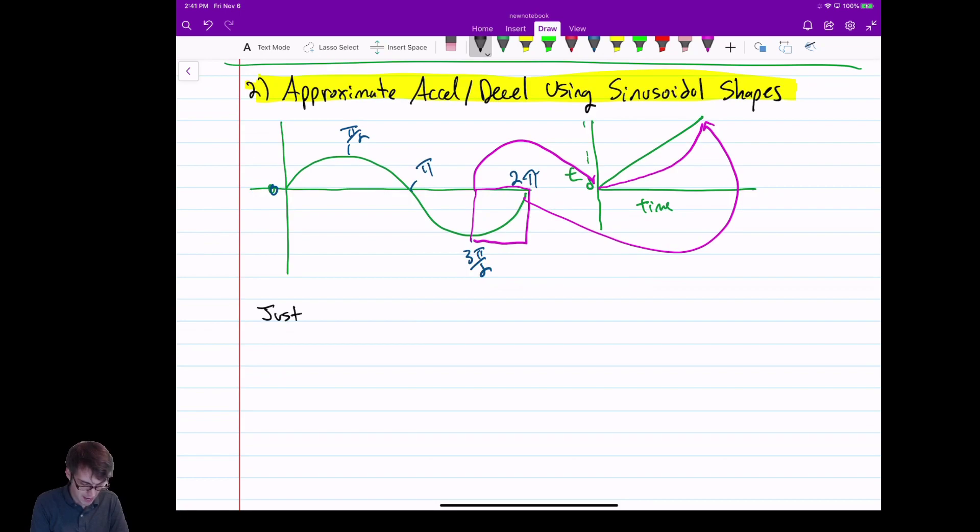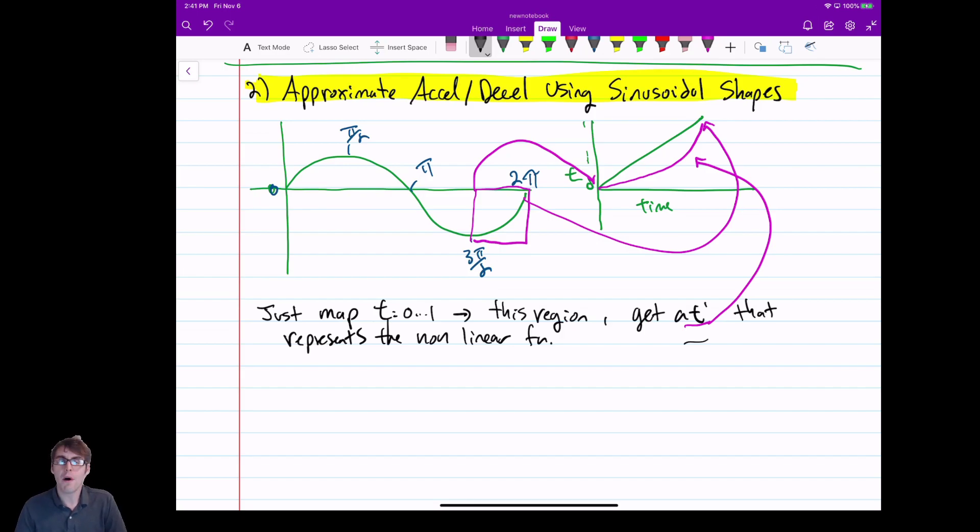So what we want to do is just do that mapping. So we map t of zero to one to this region. And then if we do that, we come up with like a t prime. A t prime that represents the pink line, that represents the nonlinear function. So if I calculate a t prime, what I'm actually doing is I'm modifying t in a nonlinear fashion. I get to use my existing lerp. I don't need to rewrite lerp.